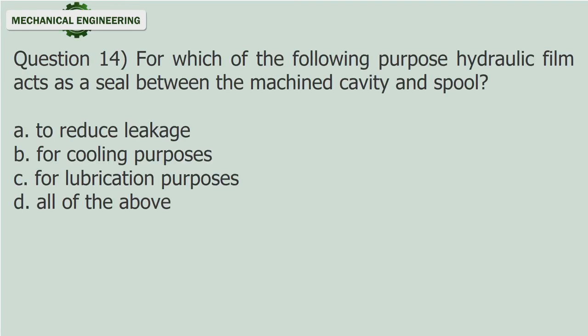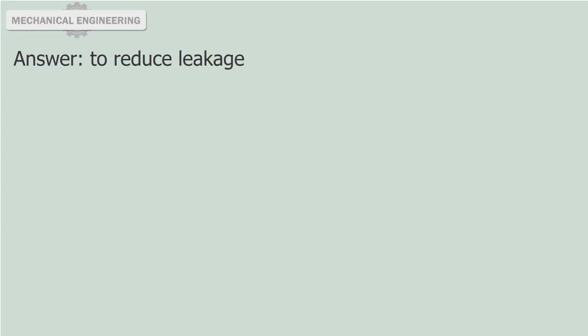Question 14: For which of the following purposes does the hydraulic film act as a seal between the machined cavity and spool? A. To reduce leakage. B. For cooling purposes. C. For lubrication purposes. D. All of the above. Answer: To reduce leakage.